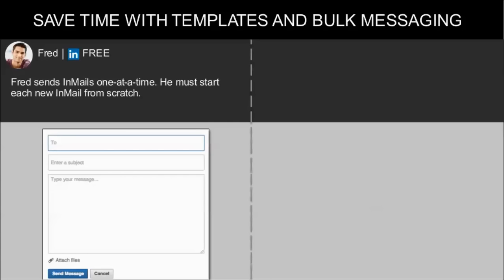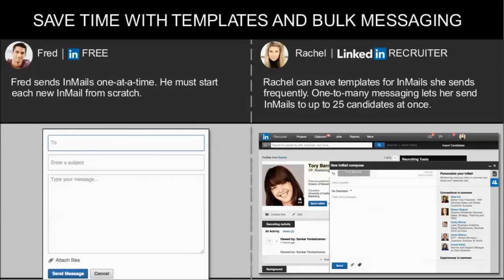Even if Fred was lucky and he knows a few of the candidates he shortlisted, he still has to write individual InMails for each of them, starting from scratch each time. But Rachel can draft InMail templates, save them, and use them anytime she wants to message potential candidates. She can send one InMail to 25 different candidates at the same time in just one click, which saves her a lot of time. In addition, LinkedIn Recruiter gives the option to find things in common between you and the candidates, such as shared connections, experience, or universities, which means you can personalize the InMail before sending it.